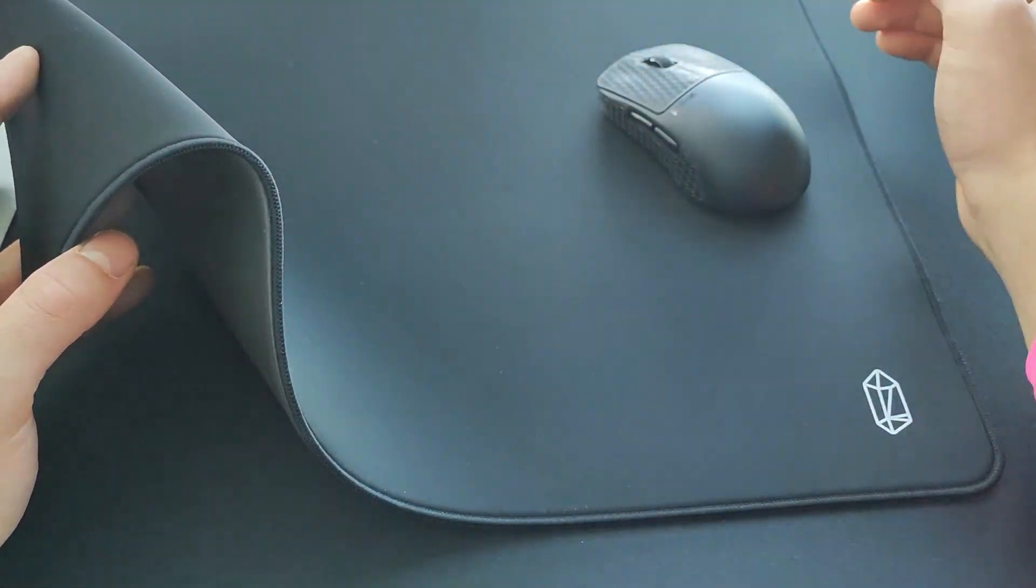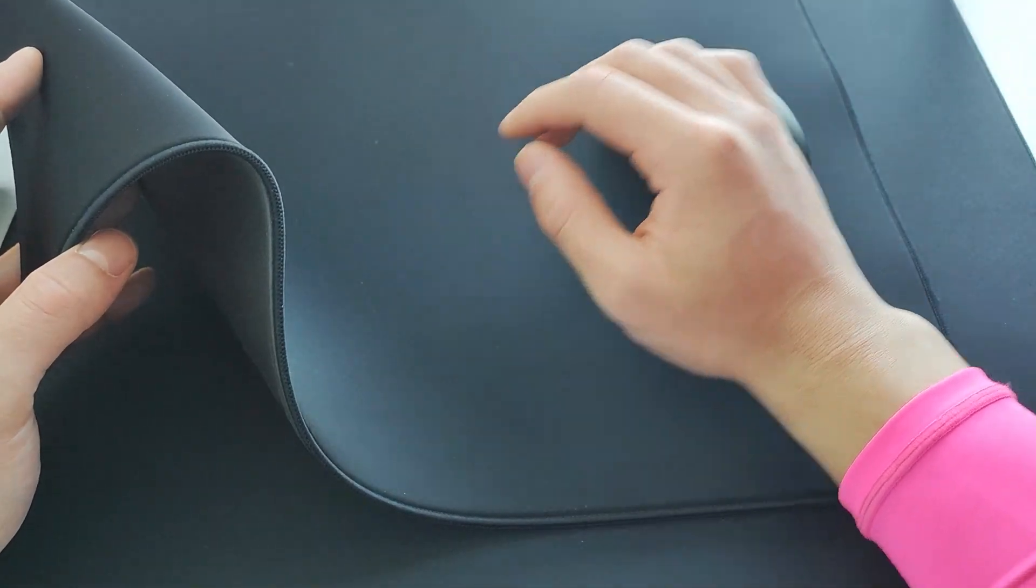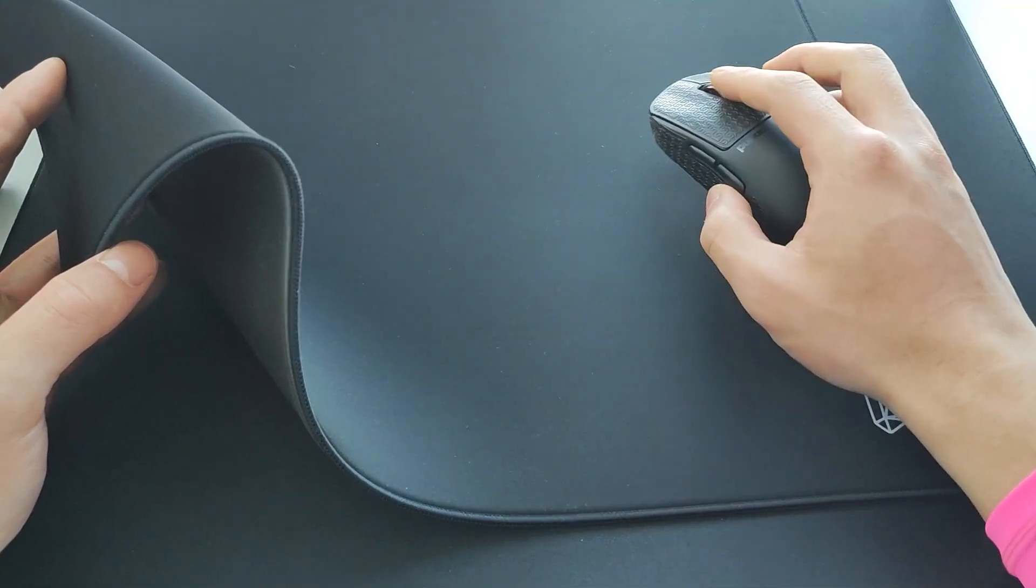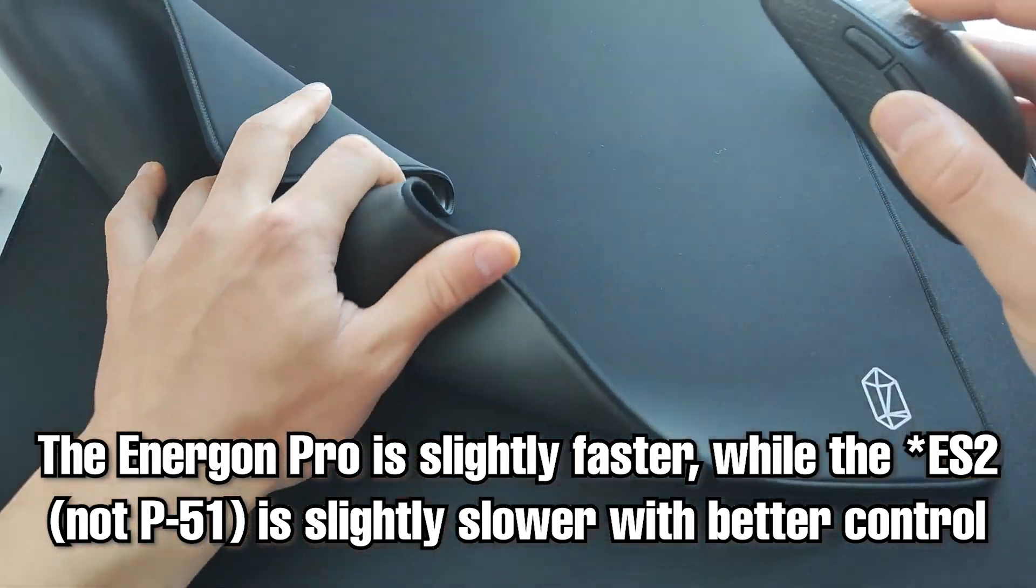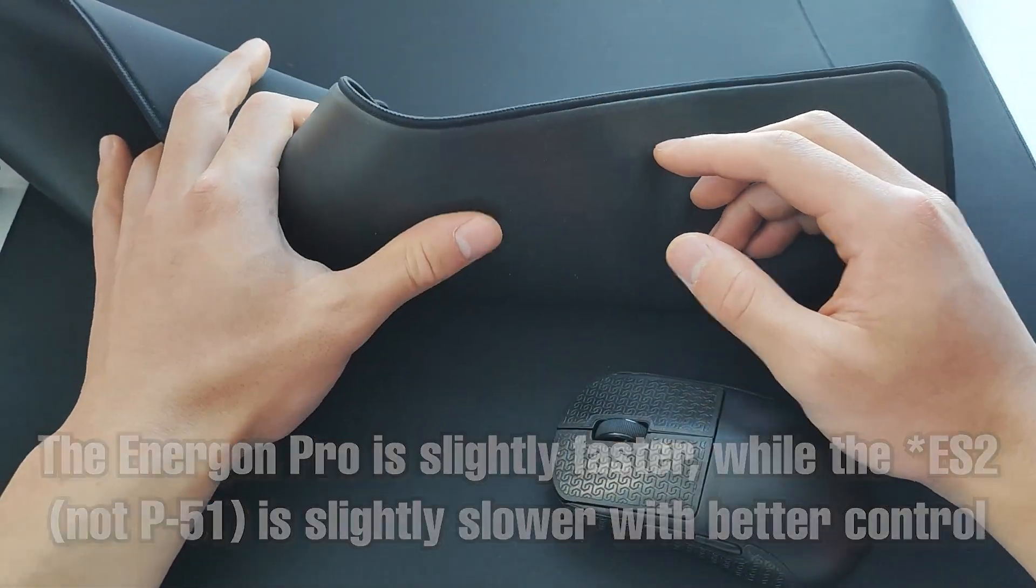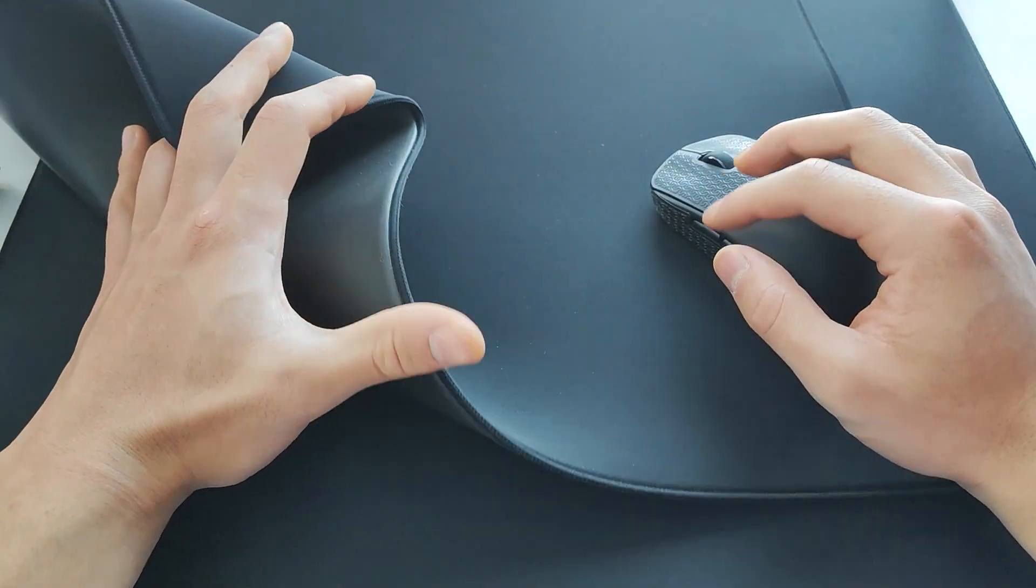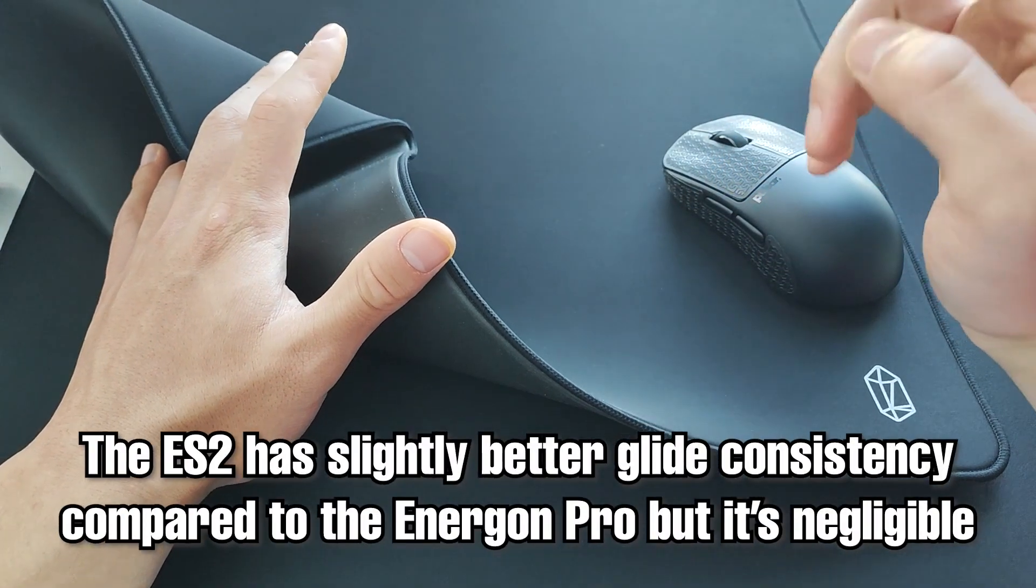Neither have any restriction on your arm at all, and you should have fully unlocked arm motion, which is something that you would want. Speed and control, the Energon is a tiny bit faster, while the P51 is a little bit slower and has better stopping power. Now I think when the term consistency comes to mind, the ES2 is definitely a little bit more consistent.